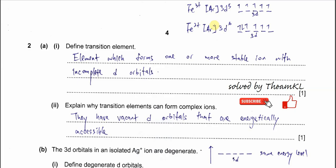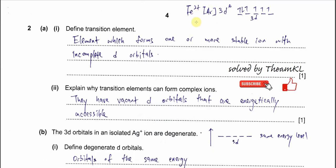The electronic configuration for the Fe²⁺ ion is argon 3d⁶, which means the 3d orbitals have six electrons — one, two, three, four, five, six — and we call this incomplete d orbitals. For the Fe³⁺ ion it is argon 3d⁵, also an incomplete d orbital. So when an element can form one or more stable ions like this with incomplete d orbitals, we consider it a transition element.